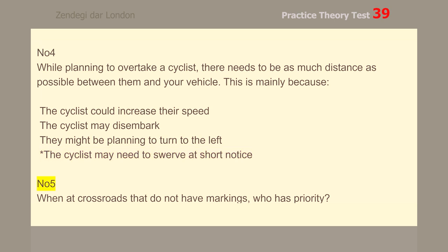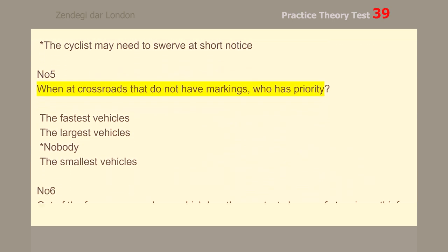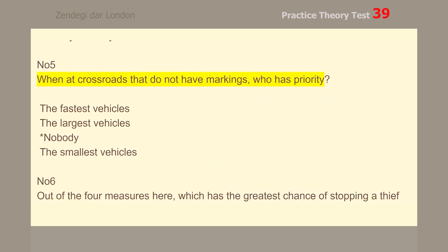Number 5. When at crossroads that do not have markings, who has priority? Nobody.